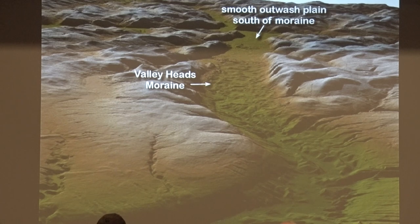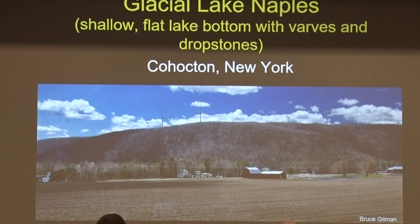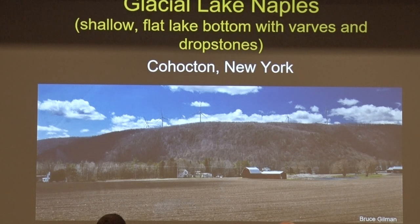But it could very well have been the Canandaigua Valley — it would have the same appearance to it. So the smooth outwash, if we look for that in the Canandaigua Valley, we have to get south of the valley heads moraine. And there it is, right down near North Cohocton — very flat, smooth outwash, shallow lake bottom area. Then traveling a little bit farther south along Route 415, almost to Cohocton, that broad area narrows down to a lake outlet channel, and there are a lot of sandy, gravelly deposits right there at Cohocton.